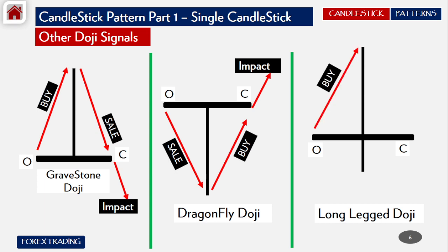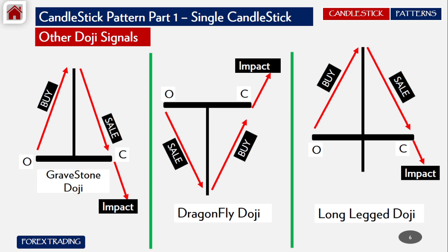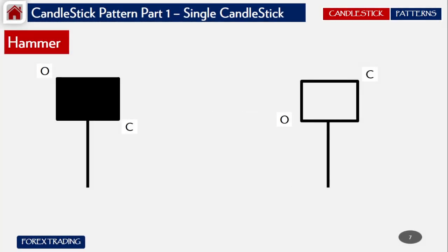For the Long-Leg Doji, the price opens, buyers take it to the upper level of the wick, and then sellers take the price down to where it had originally started — so it opens and closes at the same level. Its impact will be downwards. In all these doji cases, the price closes at the level where it had opened.